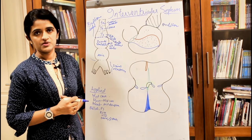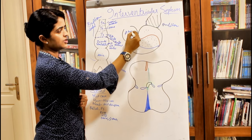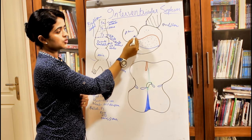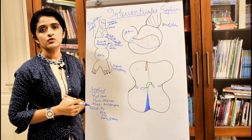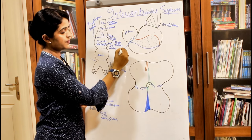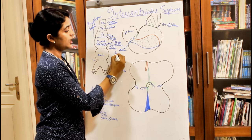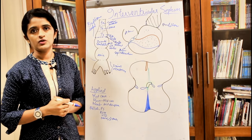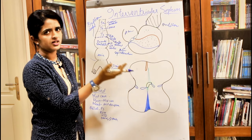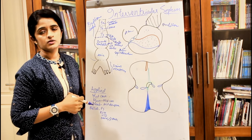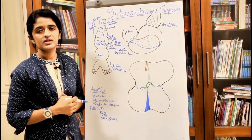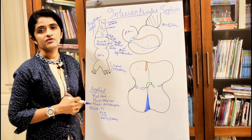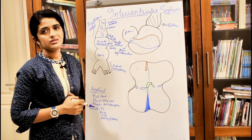Now let's see how the interventricular septum is formed. Between the common atrium and common ventricle, a cushion develops called the atrioventricular cushion or AV cushion. This AV cushion gets transformed into the septum intermedium. When an orifice develops in the AV cushion, it is called the atrioventricular orifice, which forms the future tricuspid and bicuspid orifices.